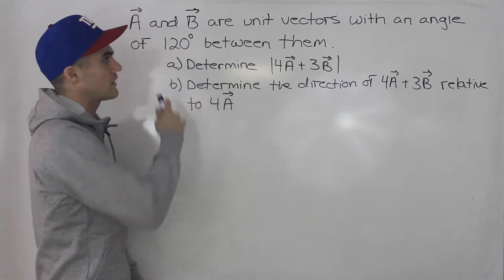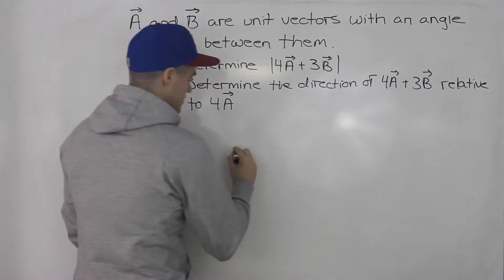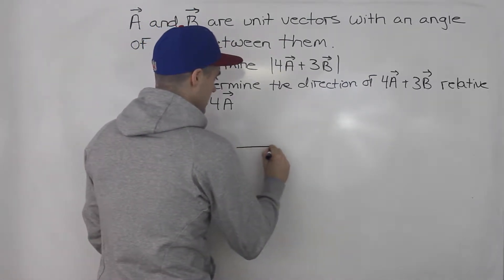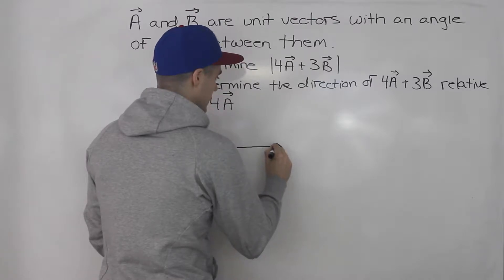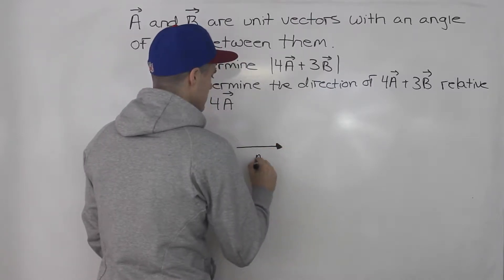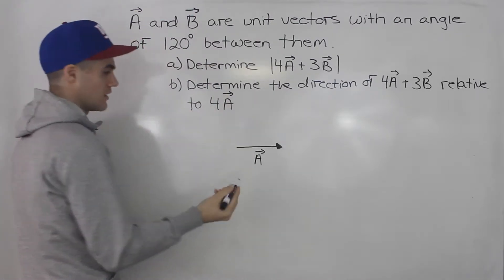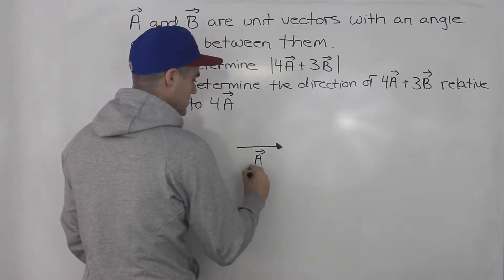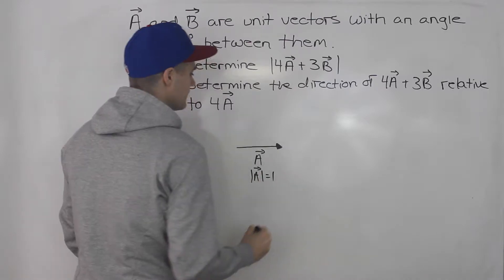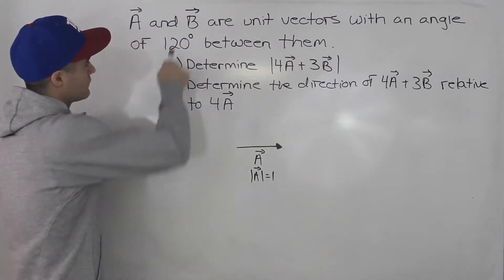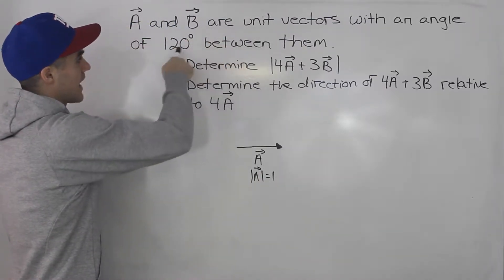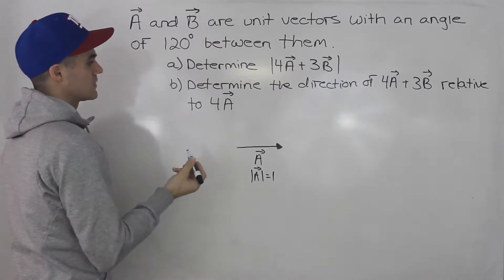So let's start off by drawing these two unit vectors a and b. Let's say this is vector a and because it's a unit vector, what's the magnitude of vector a? Well, the magnitude of vector a is just one and then we have vector b and we're told that there's an angle of 120 degrees between them.